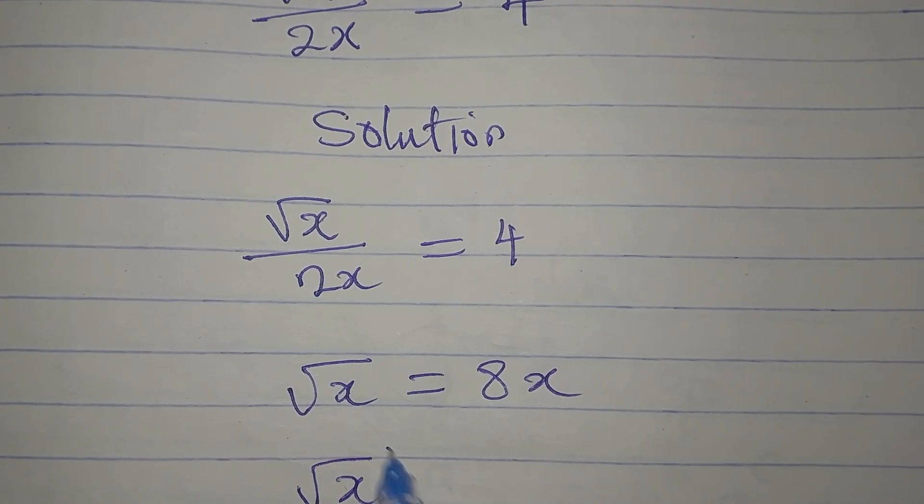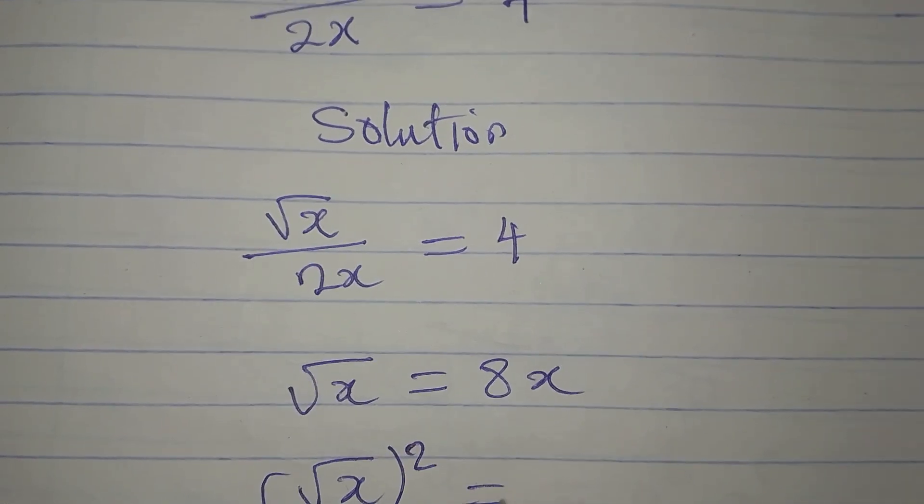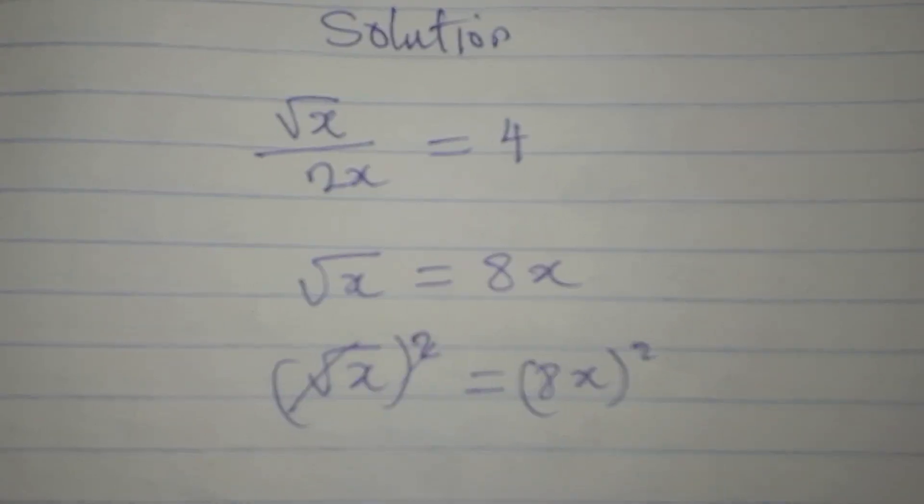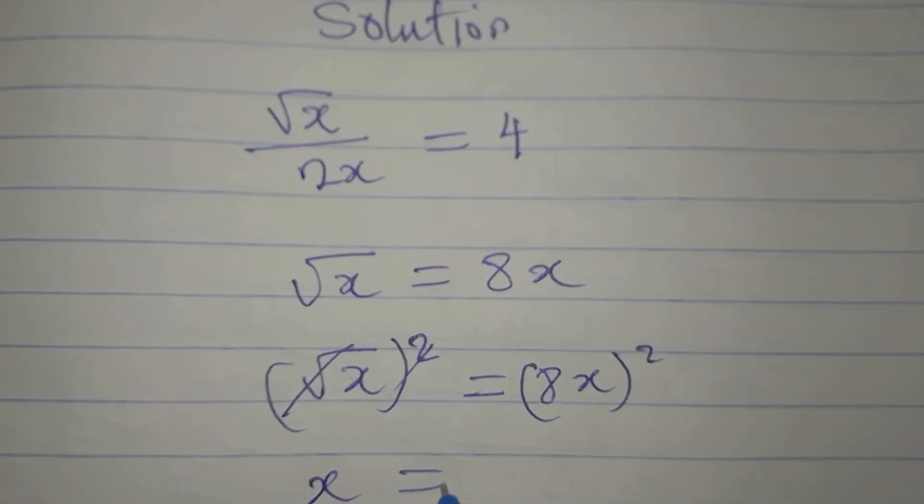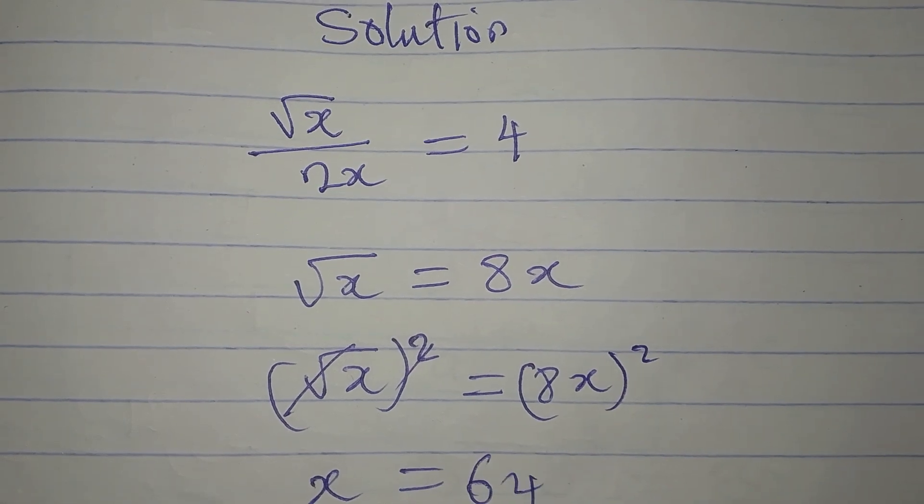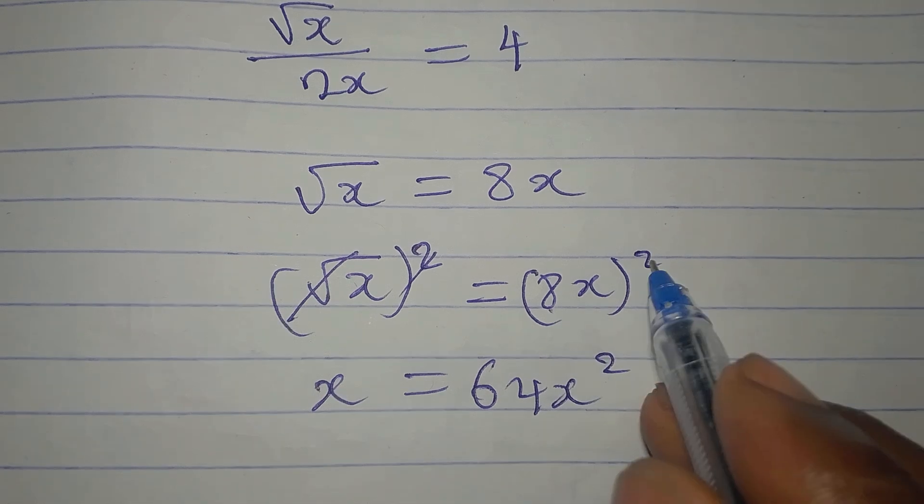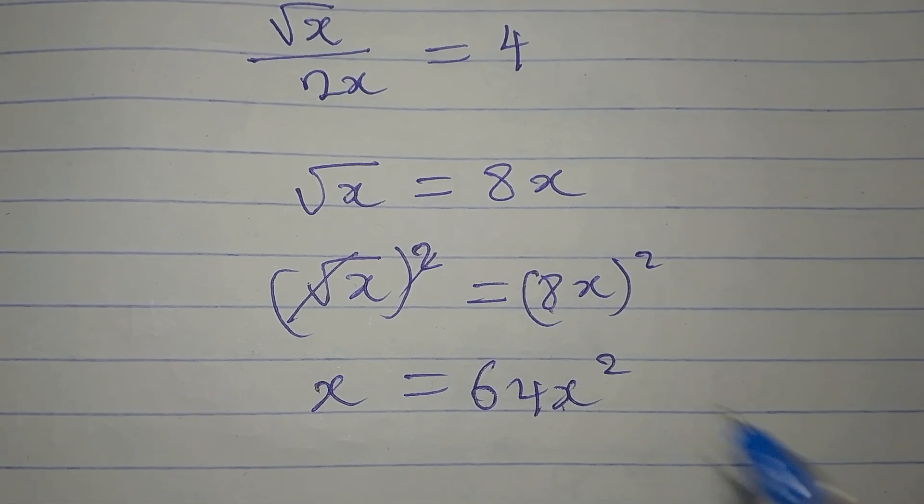We have square root of x squared equals 8x squared. This has to go with this, so x will be equal to 64x squared, because 8 squared is 64 and x squared is coming down.